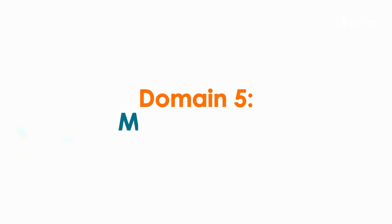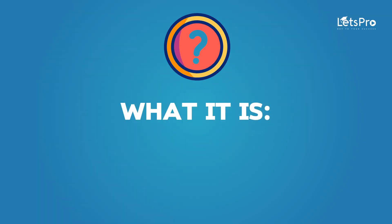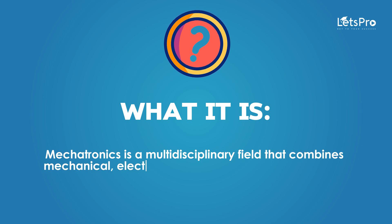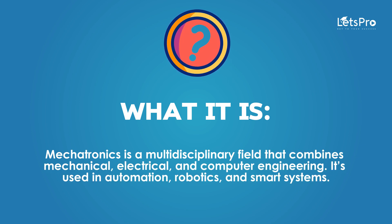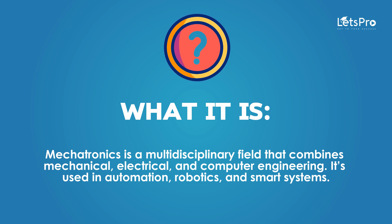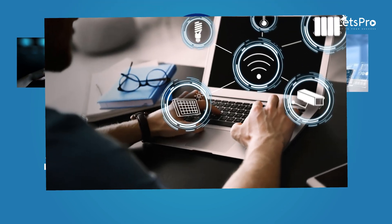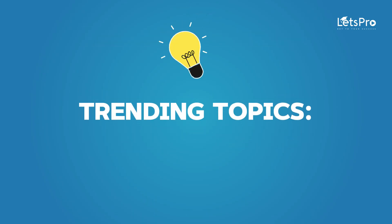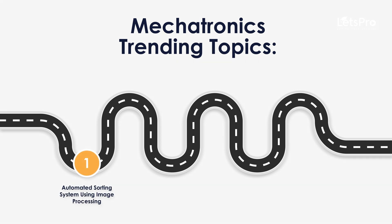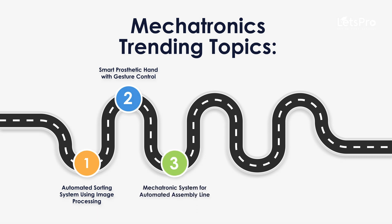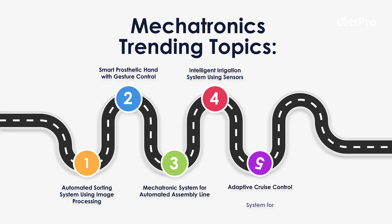Domain 5: Mechatronics. Mechatronics is a multidisciplinary field that combines mechanical, electrical and computer engineering. It is used in automation, robotics and smart systems. Trending topics include: automated sorting system using image processing, smart prosthetic hand with gesture control, mechatronics system for automated assembly line, intelligent irrigation system using sensors, and adaptive cruise control system for automobiles.